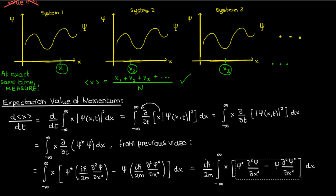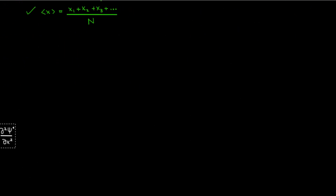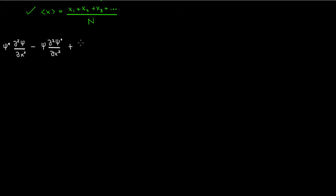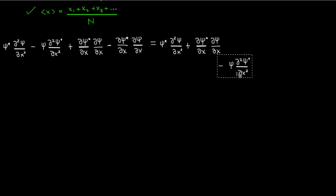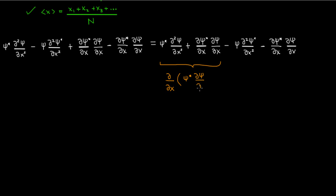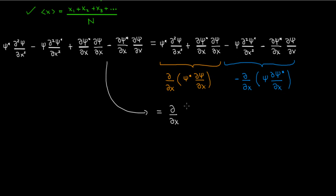Now let's take the term in square brackets to the side and try to work on it a bit more. I'm going to start by adding the derivative of psi conjugate times the derivative of psi, and then subtracting the exact same term, so on aggregate I've just added zero. Rearranging the order of these terms, notice that the first two terms look like the derivative of the product of psi conjugate and d psi dx, while the second two terms look like the derivative of the product of psi and d psi conjugate dx. So this whole expression equals the derivative of psi conjugate times d psi dx, minus psi times d psi conjugate dx.